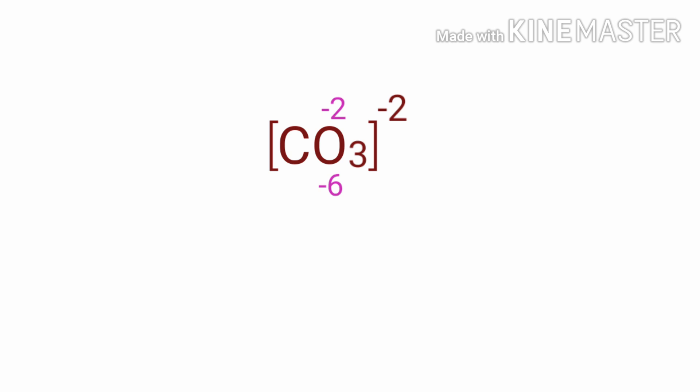As per rule, the sum of the oxidation numbers in a polyatomic ion is equal to the charge of the ion. So the number under C must be plus 4.